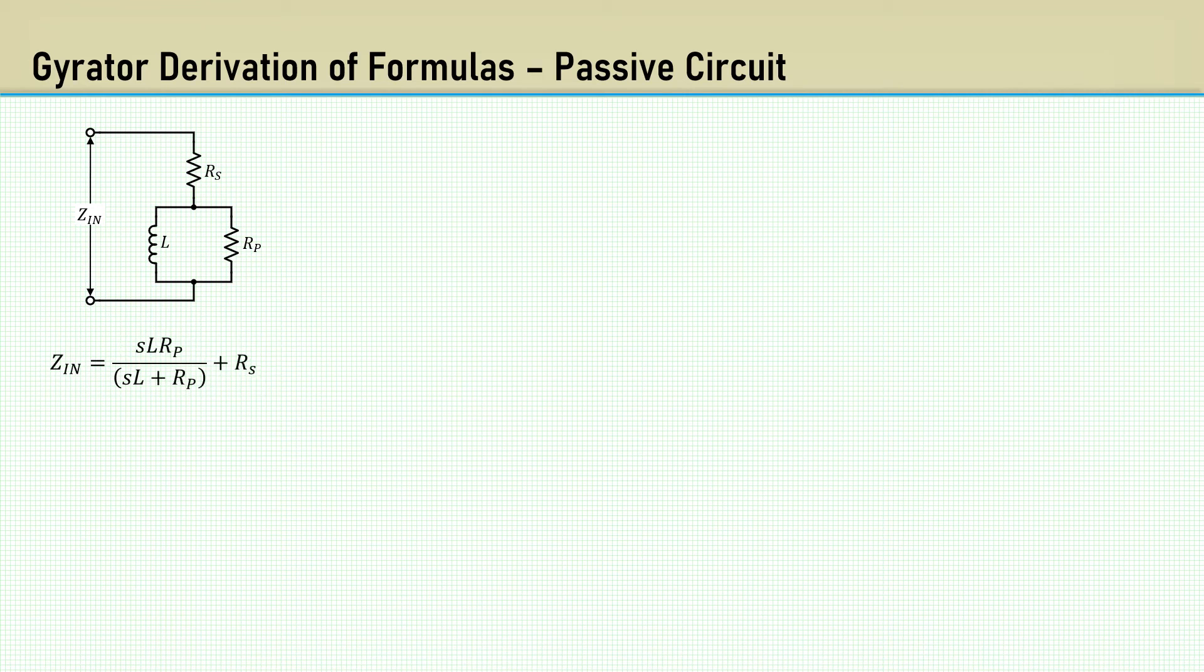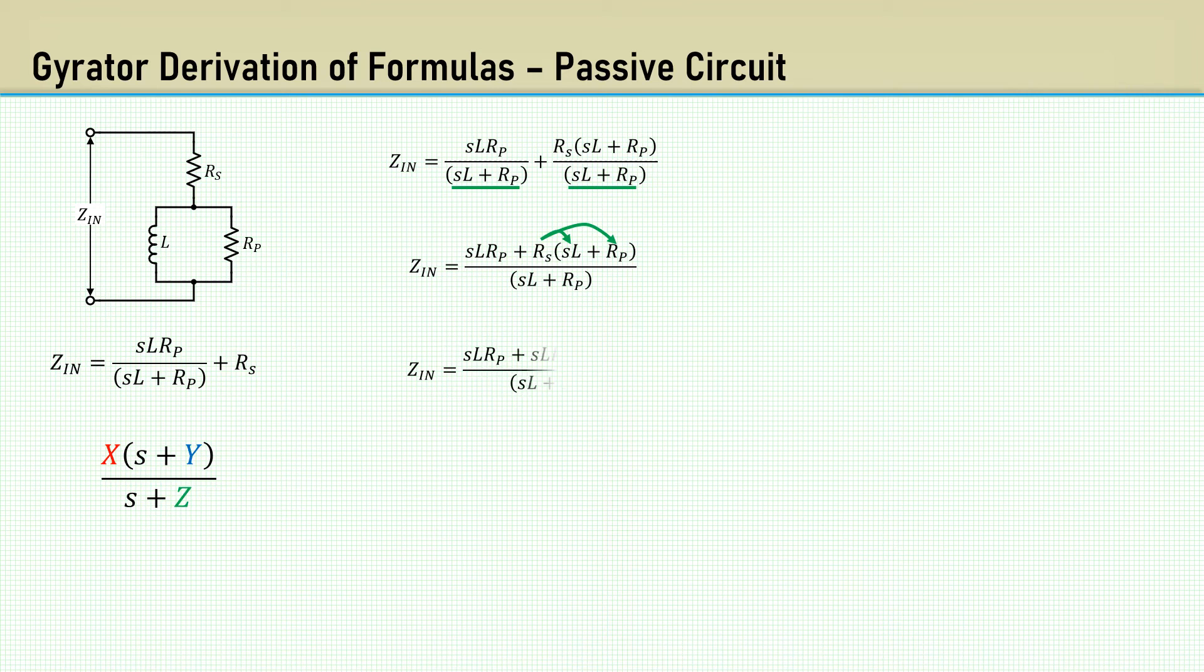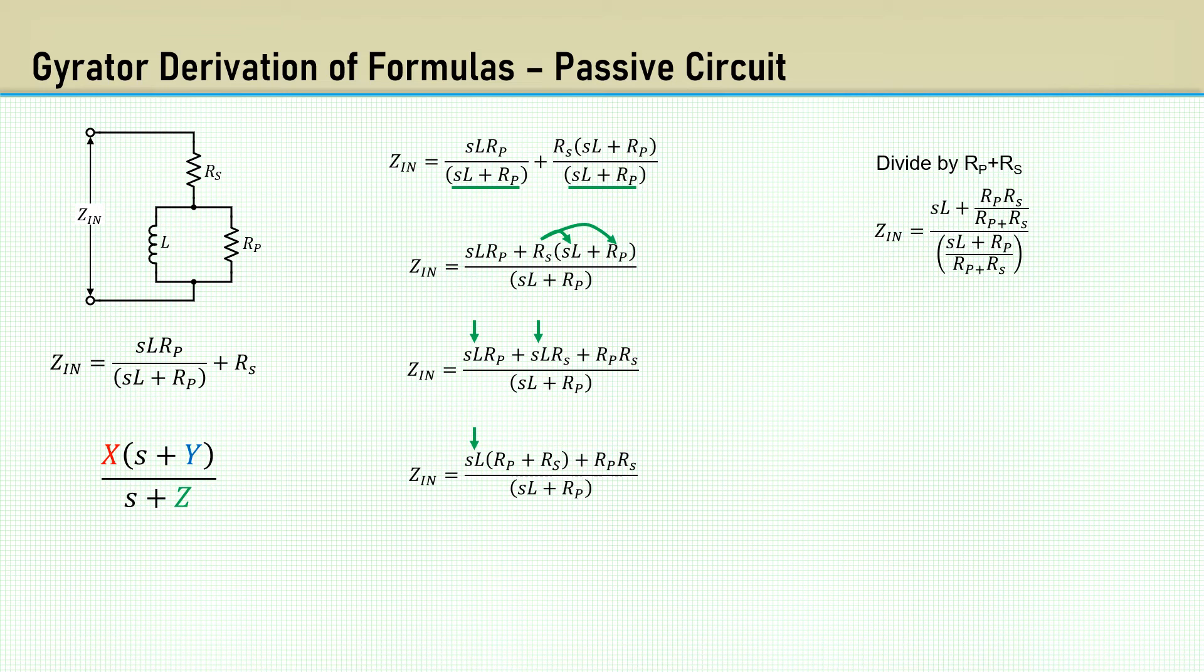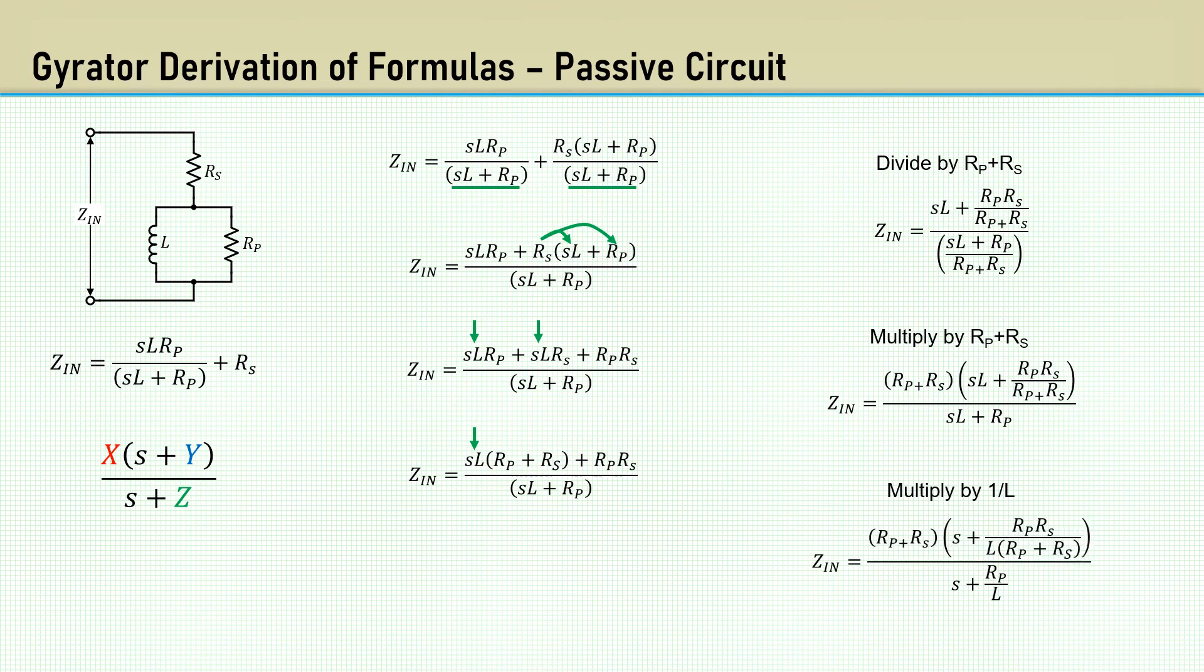We begin with the formula for the impedance of the equivalent passive circuit. This is simply L and RP in parallel, plus RS. We want to rearrange it into this form with the S, the complex frequency parameter, isolated. To add RS, we make the common denominator of SL plus RP, then adding the terms in the numerator. Distributing RS into SL and RP gives us this. Factor out SL from the first two terms. Remember, we are working toward isolating S. Divide top and bottom by RP plus RS. Then multiply RP plus RS. Finally, to fully isolate S, multiply the top and bottom by L. You can see we have achieved in getting this into the form we desired.